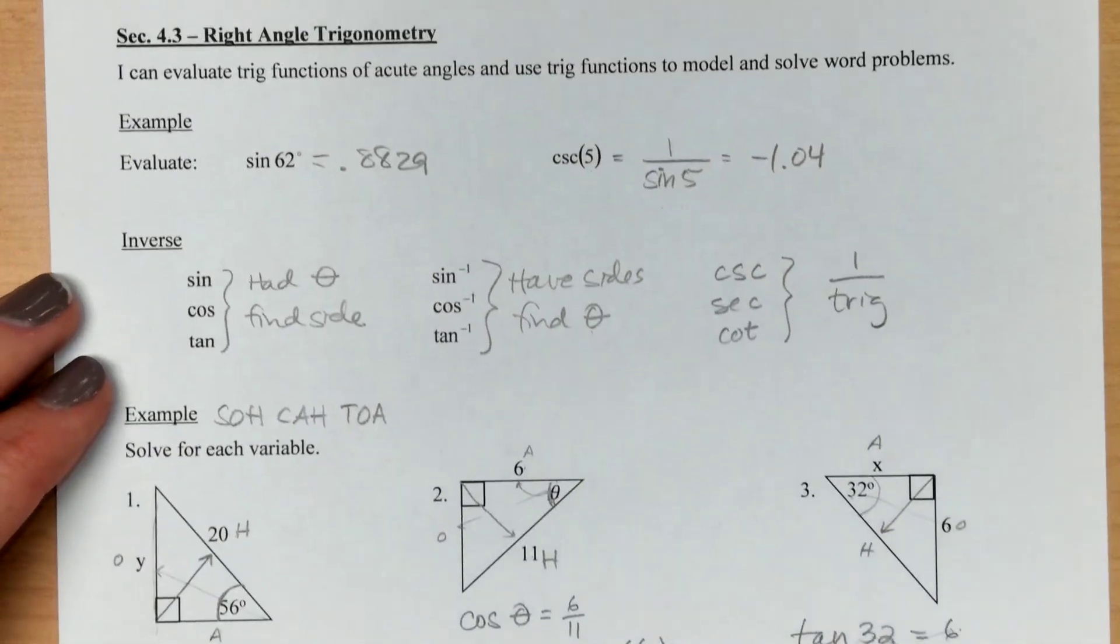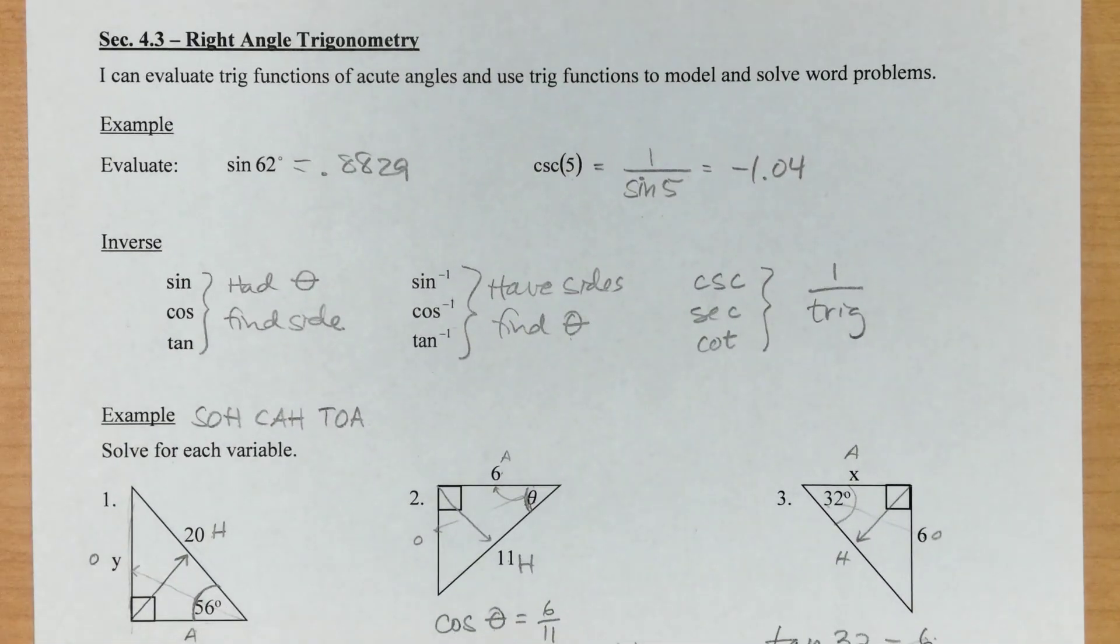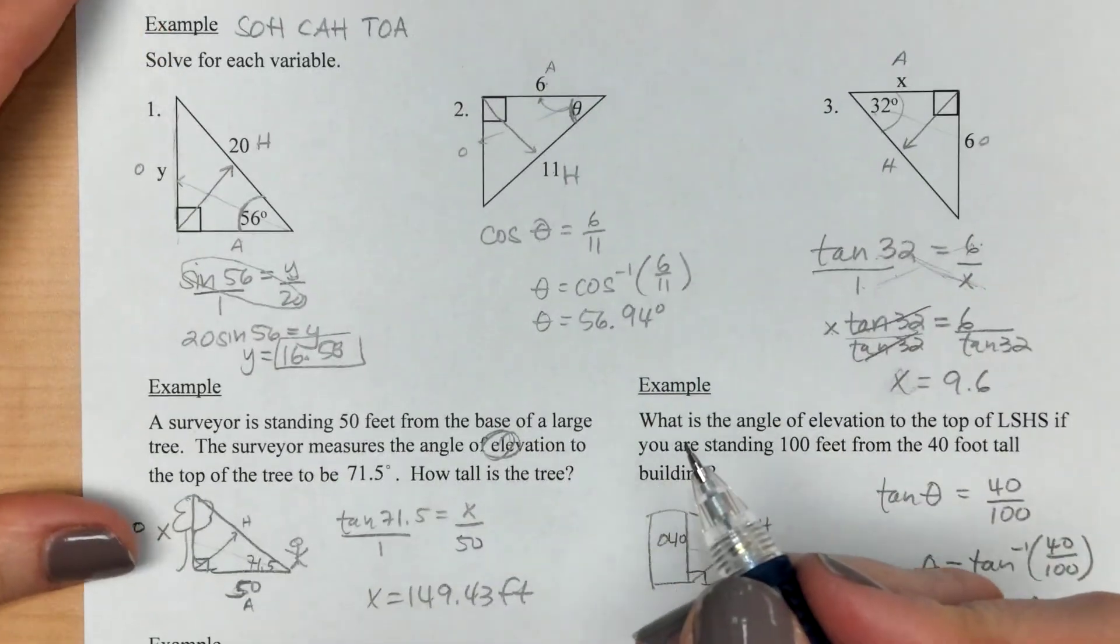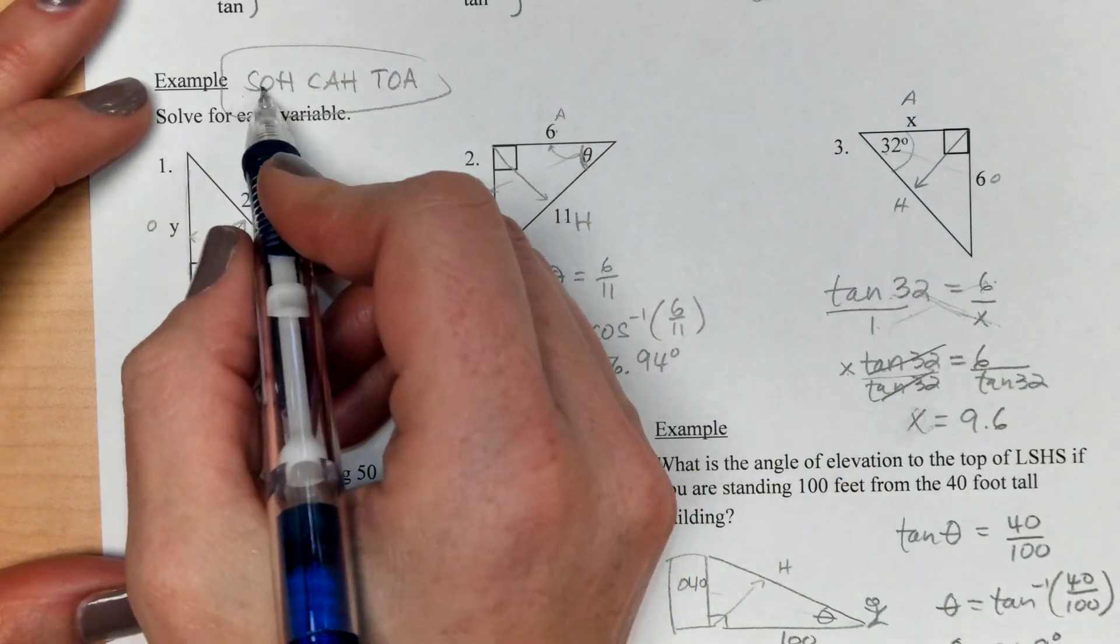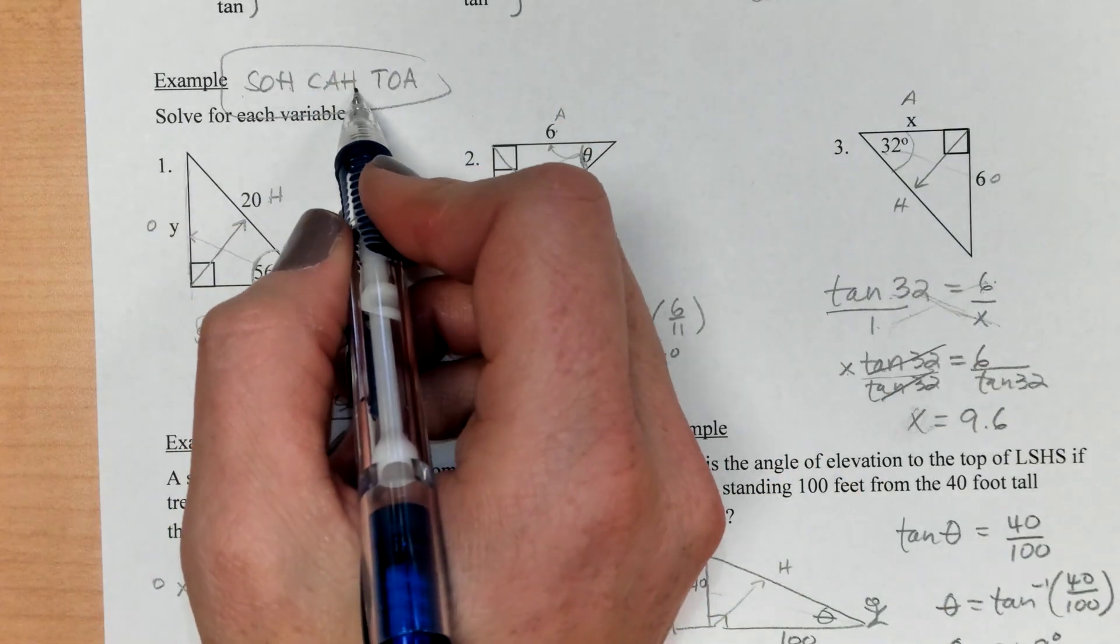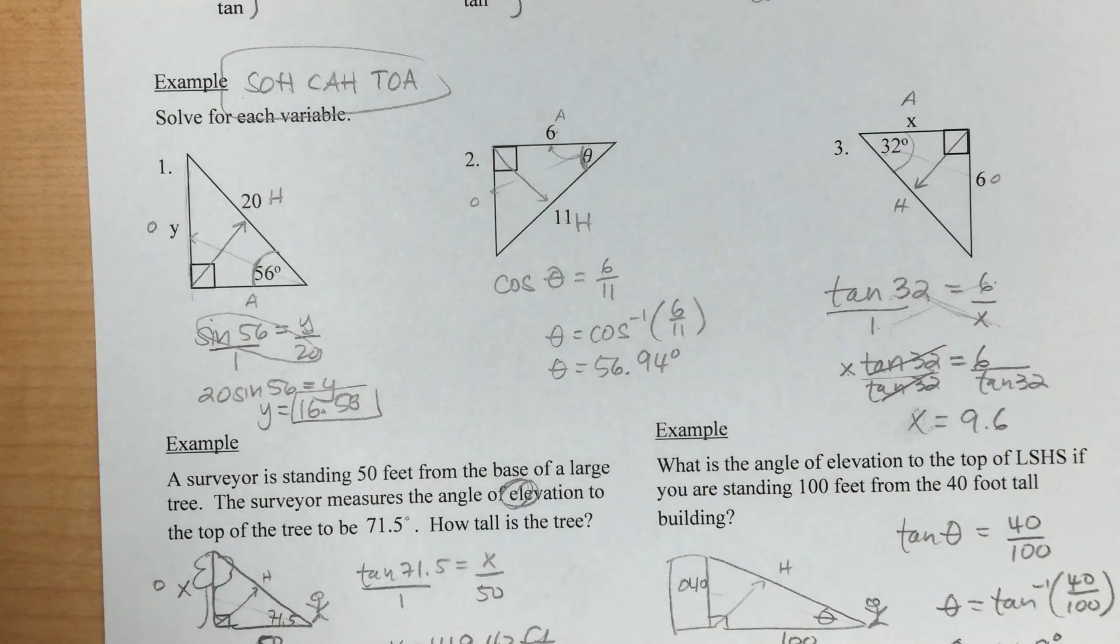So that's our basic refresh on SOHCAHTOA. I did write it right here. So sine is opposite over hypotenuse. Cosine is adjacent over hypotenuse. And tangent is opposite over adjacent.